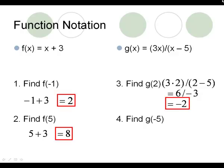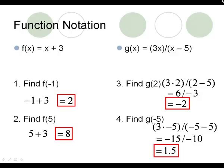On number 4, plugging negative 5 in as x: 3 times negative 5 is negative 15, over negative 5 minus 5 is negative 10. Negative 15 divided by negative 10 is positive 1.5.